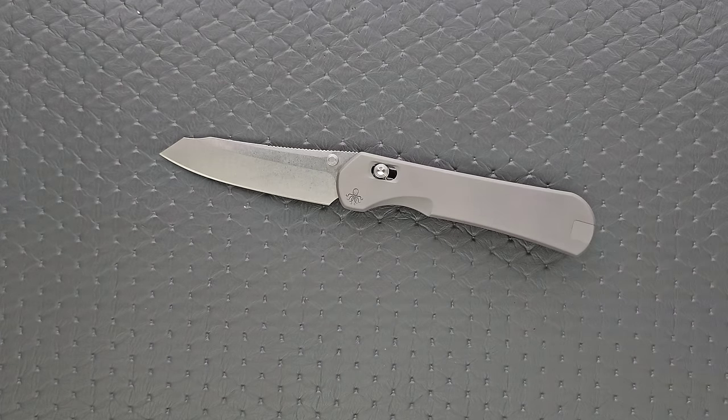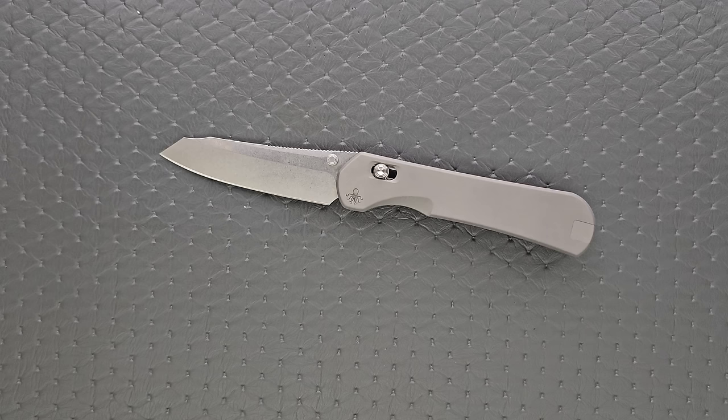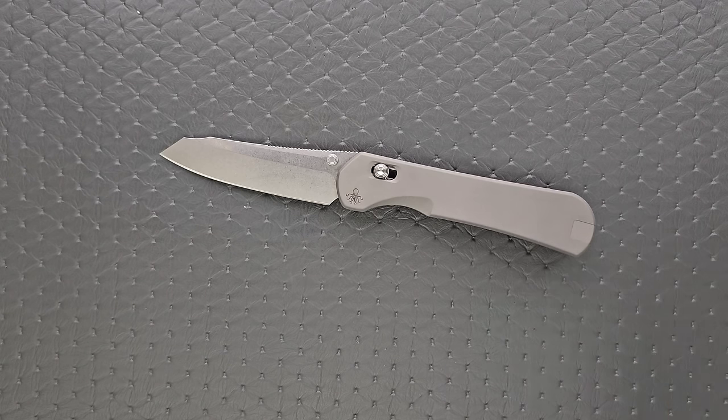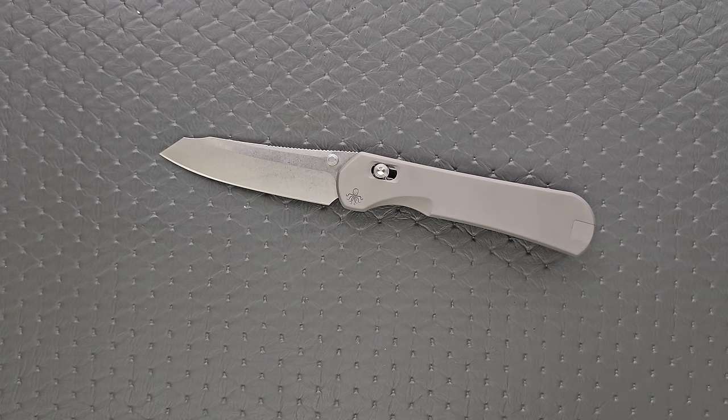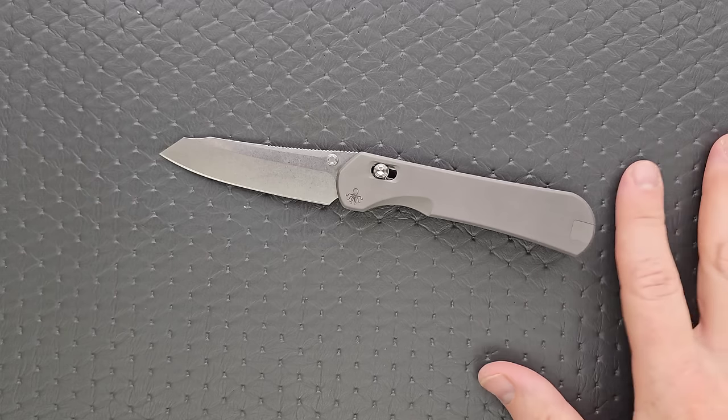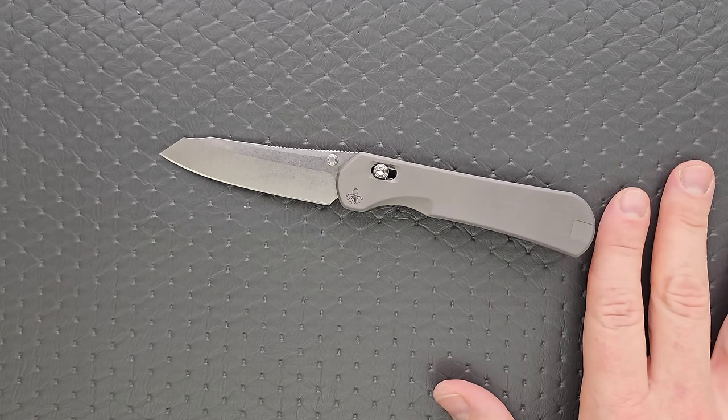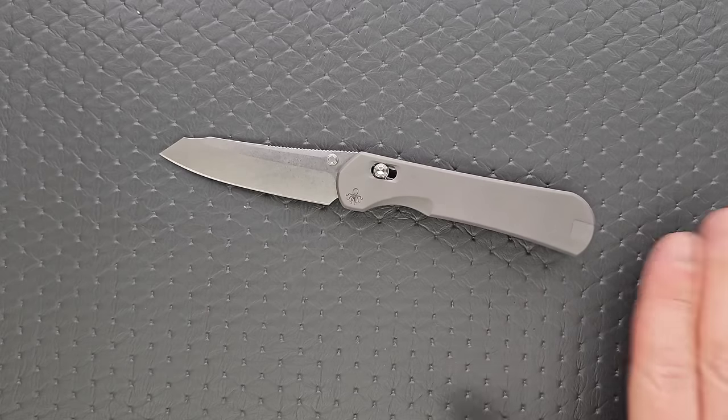So how much does this cost? Okay, so the initial run was 280 bucks which is, yeah, I mean, it's S90V and it does have some cool elements here, right? No milled backspacer, not a big deal. Not contoured, titanium, not textured, anything like that. It would have been nice to see but it's not there. The second run is 300. It's a little pricey.